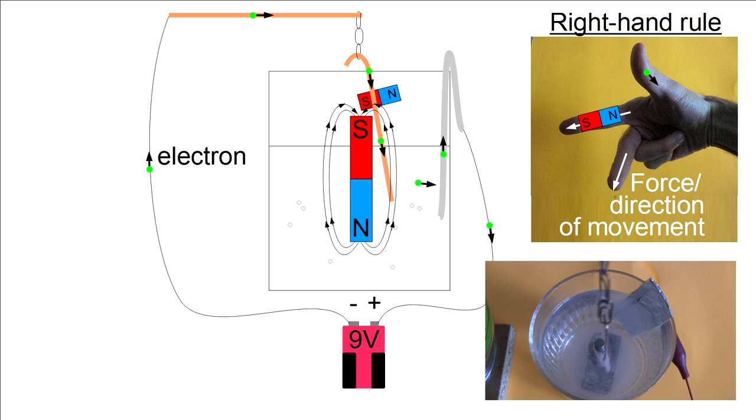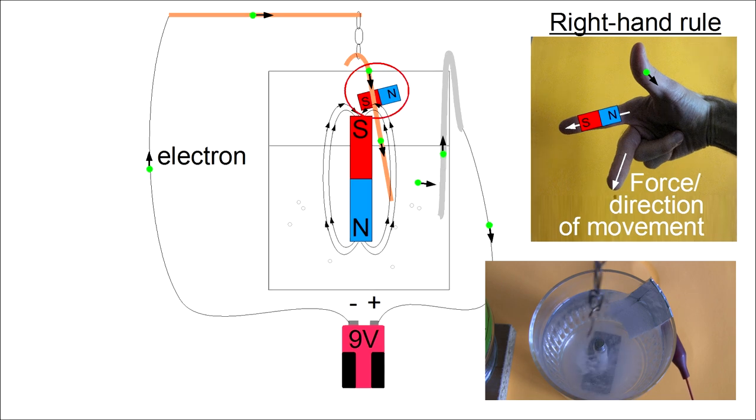As an exercise use the right-hand rule this way to confirm that the force will always cause the wire to rotate around the magnet. Note that we're talking about what happens to the wire in the magnetic field near the top of the magnet. Lower down the wire is largely parallel to the magnetic field and in that case there's little or no force experienced. The force happens when the direction of electron flow is at right angles or perpendicular to the magnetic field, like it is near the top.